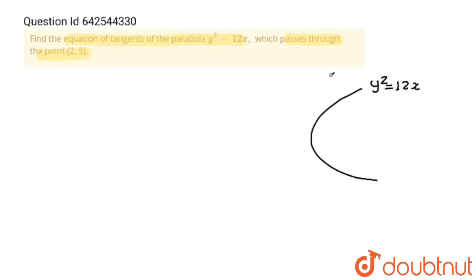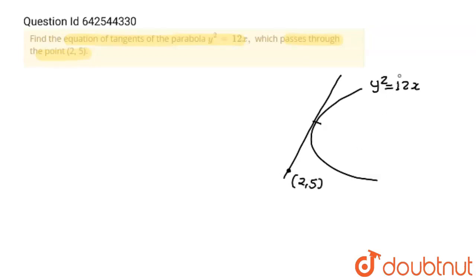This is one tangent which is passing through point (2,5), and (2,5) is not lying on this parabola. So we have to find the equation of this tangent. There are two tangents possible.